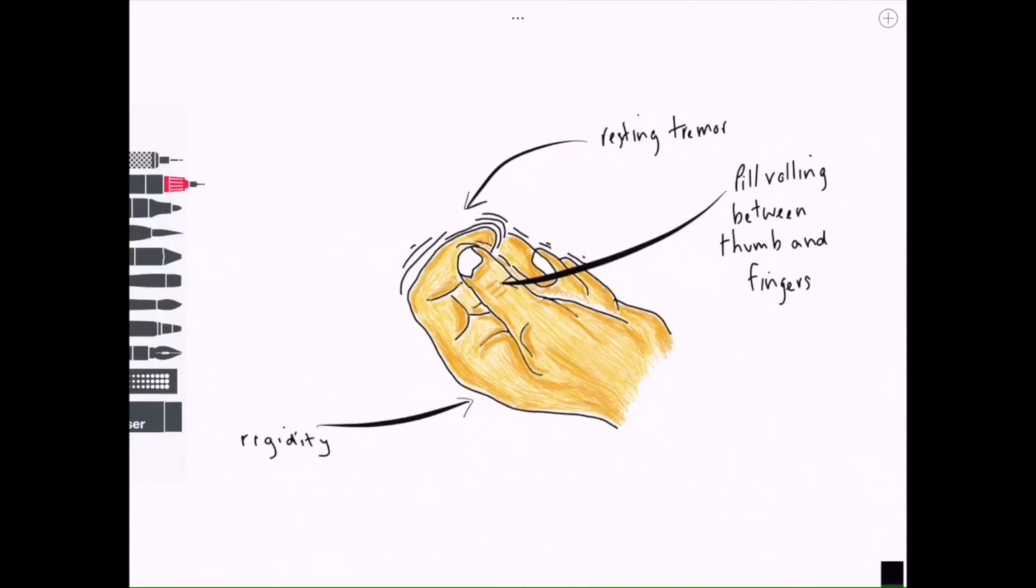The rigidity can be described as lead pipe rigidity, and this is the term used to describe the sustained resistance to passive movement. This is different to the clasp and knife rigidity that we see in patients with upper motor neuron syndrome.